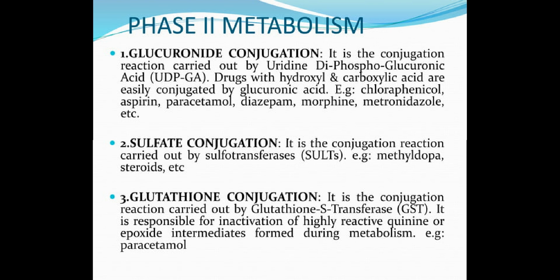Phase 2 metabolism includes glucuronide conjugation, sulfate conjugation, glutathione conjugation, amino acid conjugation, acetylation, and methylation. First, glucuronide conjugation — it is the conjugation reaction carried out by uridine diphosphoglucuronic acid (UDPGA). Second, sulfate conjugation — it is the conjugation reaction carried out by sulfotransferase (SULT), for example methyldopa and steroids.